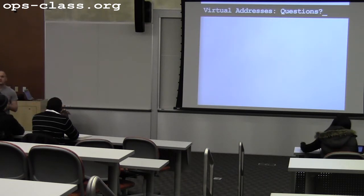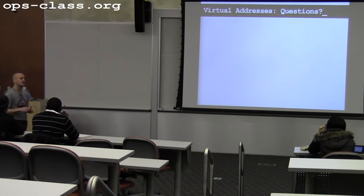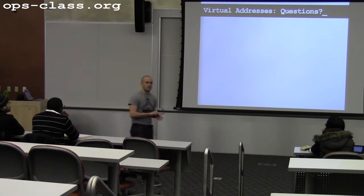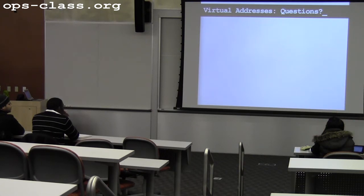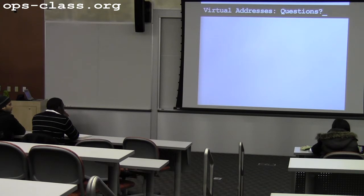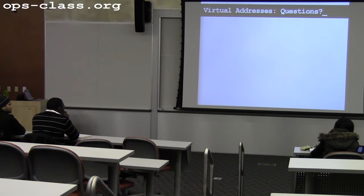So, questions about virtual addressing. Remember on Wednesday we looked at problems with direct physical allocation of memory, and we came up with this great idea for an abstraction that would solve these problems that we call address spaces. And then on Friday we talked about address translation, and this idea that rather than giving processes direct access to physical memory addresses, we would introduce this level of indirection that would give us all of these nice properties. So today we're going to start talking about how we actually do that — how do we actually implement that ideal view of memory?